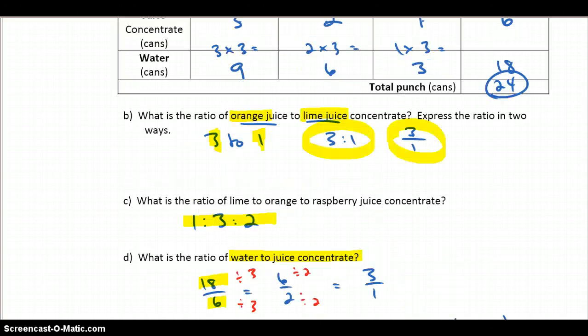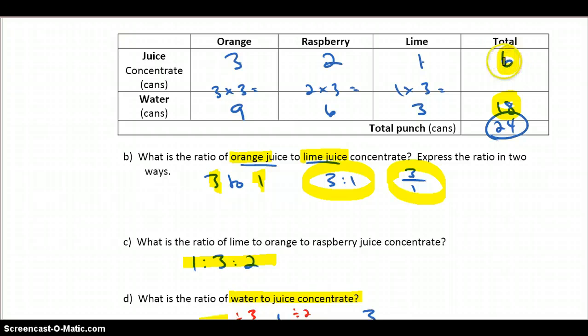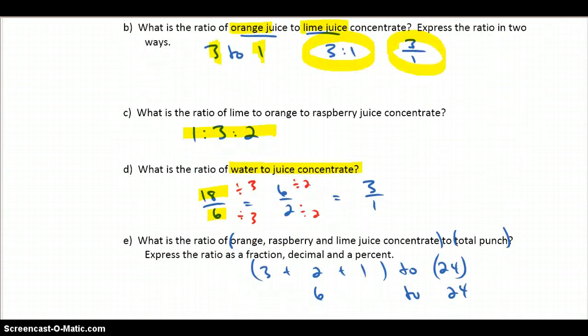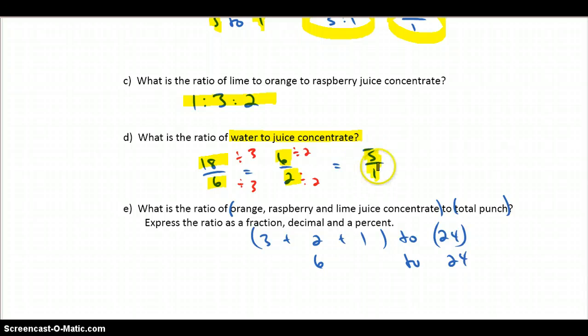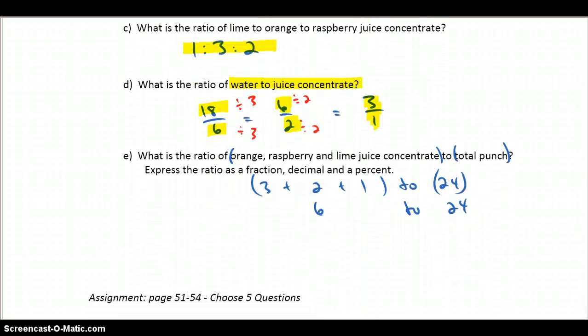What's the ratio of orange to lime to raspberry juice concentrate? Hopefully, you got that. Ratio of water to juice concentrate. So, I took my 18 and 6 out of the table here. I took my water to juice concentrate. Did a little reducing. A couple steps there. Got it down to 3 to 1. So, that should be the ratio we use.